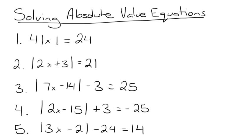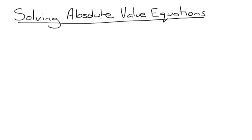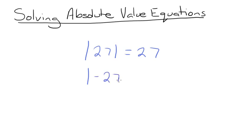Hi, and welcome to this video on solving absolute value equations. Before we get started, let's review what an absolute value is. The absolute value of a number is the distance that number is away from 0. In other words, you make any number positive. So the absolute value of 27 is equal to 27, but the absolute value of negative 27 is also equal to 27.